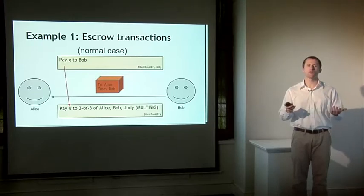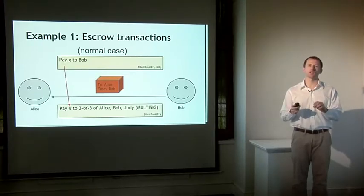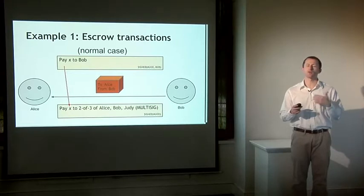So in the normal case, this isn't that much less efficient than Alice just sending Bob the money — it requires just one extra transaction on the blockchain.